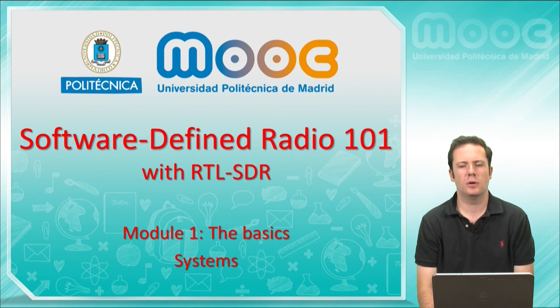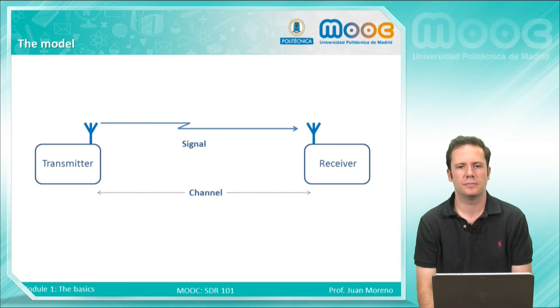In this video, following with the parts of the basics, we will see the systems. This is the model that we presented in the previous video - we have a transmitter with its antenna, the channel between the transmitter and the receiver, and the receiver. What we transmit is the signal.